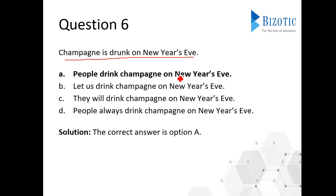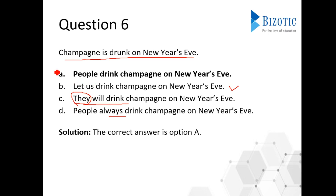The options are: A) 'People drink champagne on New Year's Eve,' B) 'Let us drink champagne on New Year's Eve' — which sounds like a dialogue, so that's not the answer — C) 'They will drink champagne on New Year's Eve' — 'they' is unclear — and D) 'People always drink champagne.' The only option that gives proper information is option A: 'People drink champagne on New Year's Eve.'